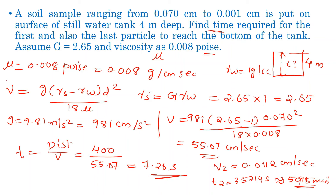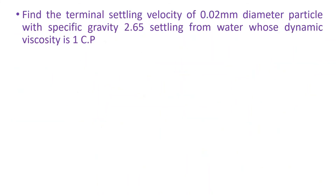Time is calculated as distance divided by velocity. Next problem: find the terminal velocity of a 0.02 mm diameter particle with specific gravity 2.65 settling in water. Dynamic viscosity is 1 centipoise.